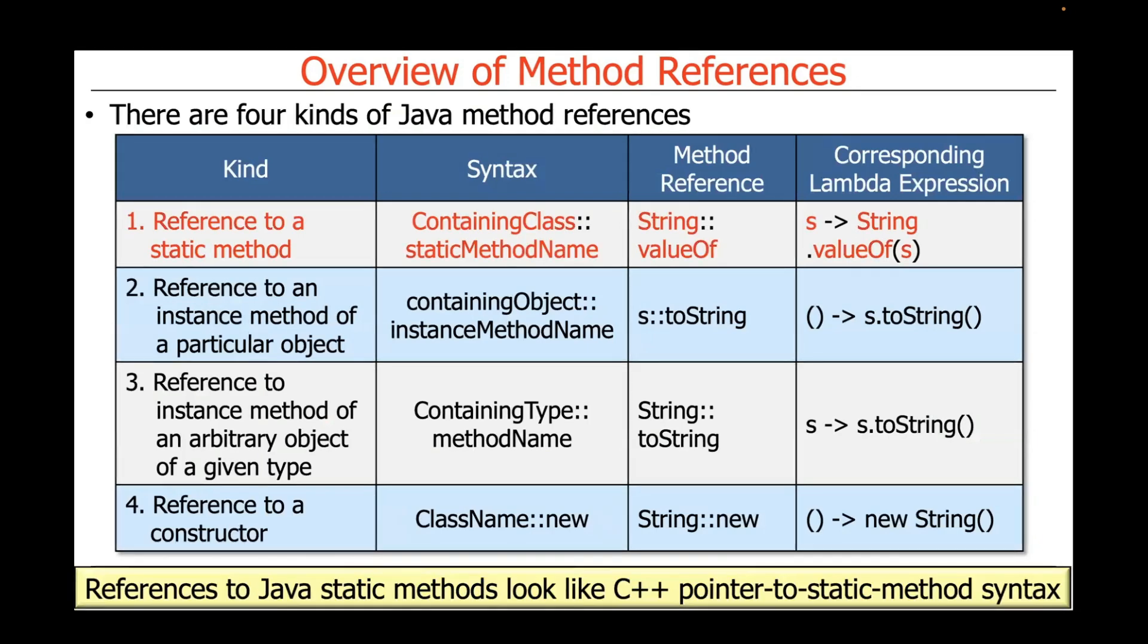The first is a reference to a static method. For example, if you have a class with a static Java method, you can reference that as containing class colon colon static method name. A good example would be the string valueOf method, which is a static method that converts various types like integers and longs and floats and so on to a string. On the right-hand column, you can see that there's a corresponding Lambda expression.